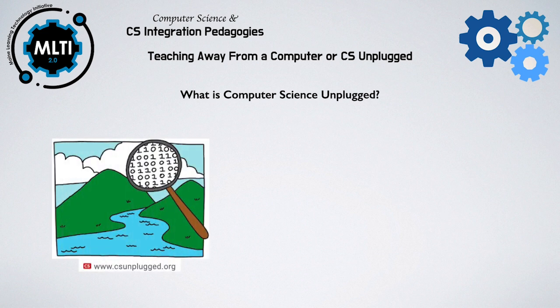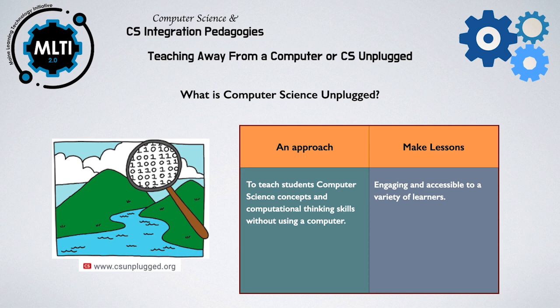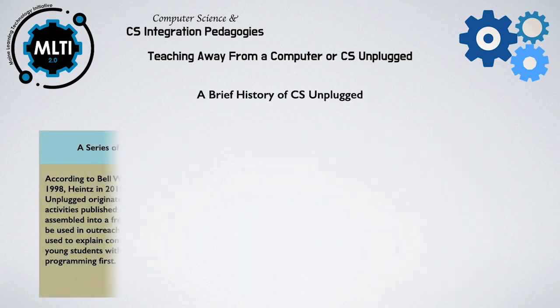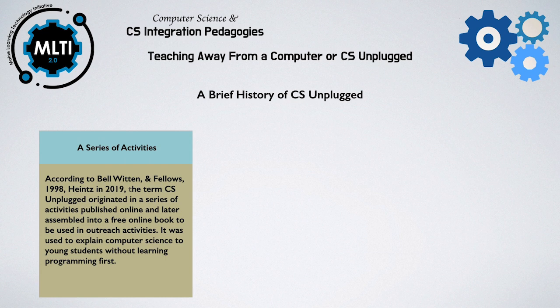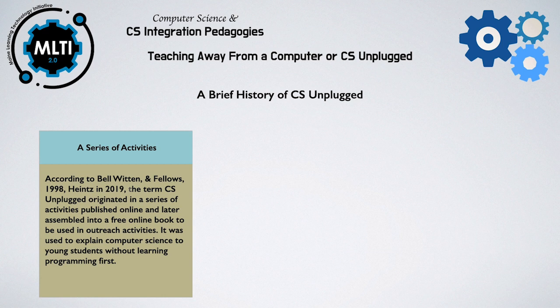Teaching away from a computer, or computer science unplugged, is a teaching method to teach students computer science concepts and computational thinking skills without using a computer. It makes lessons engaging and accessible to a variety of learners. According to Bell and Whitten in 1998 and Heinz in 2019, the term computer science unplugged originated in a series of activities published online and later assembled into a free online book. It was originally intended as an outreach tool to explain computer science concepts to young students without learning programming first.